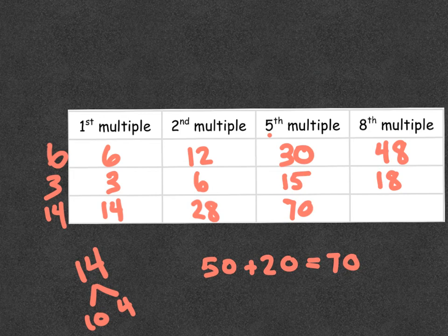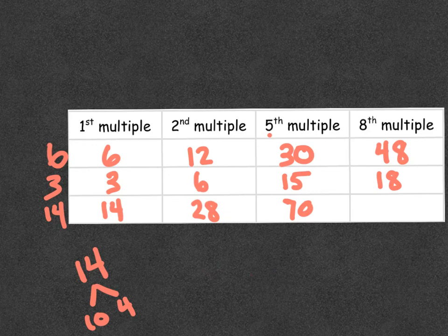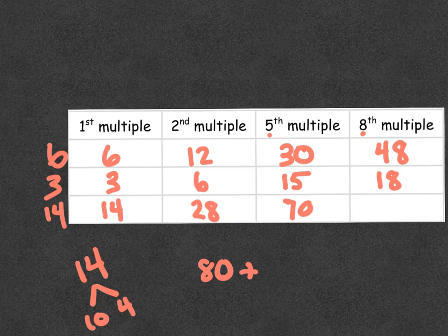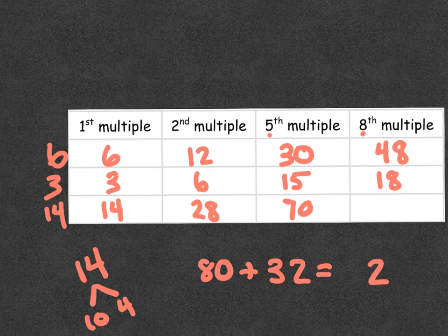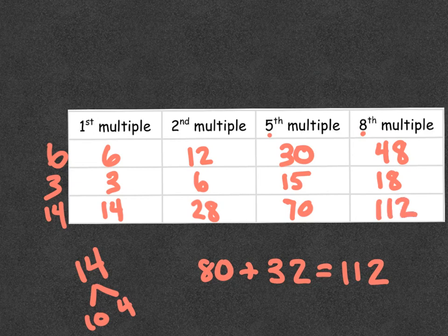Okay, and we can do the same thing. Four times eight. So again, eight times ten would be eighty. Eight times four would be thirty-two. When we add that up, we get one hundred twelve. So one hundred twelve would be our multiple.